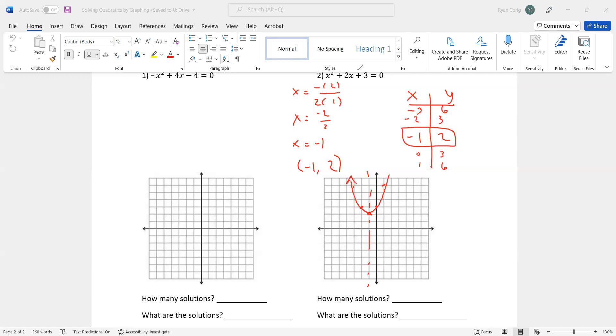How many solutions does this one have? Hopefully you see that there are none, right? It never crosses the x-axis. There are no solutions to this one. So what are the solutions? Well, there aren't any. What that means is I cannot find... There's no x value that I could put in that would make the y value 0. That's what that's saying.